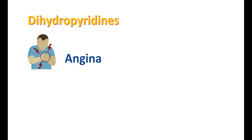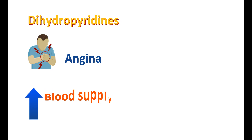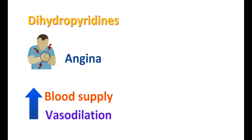Even though dihydropyridines are not directly acting on the heart, they can still be used for the treatment of angina — a pain in the heart due to insufficient blood supply to the cardiac muscle. They act on the blood vessels supplying the cardiac system, improving blood supply by producing vasodilation. That is why dihydropyridines are particularly useful in vasospastic angina, an angina associated with vasoconstriction, and can also manage chronic stable angina and Prinzmetal angina.